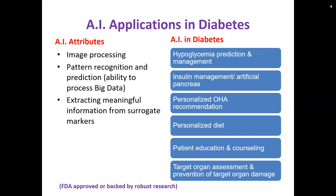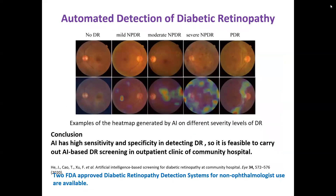Target organ assessment is also possible — software can give you information indicating that a particular patient is going to have a specific problem or organ damage in the future. It can alert you if your prescription is missing a required medication, such as a lipid-lowering agent or a medicine to reduce risk of renal failure. If microalbuminuria is positive and medication is not written, the AI will flag it.